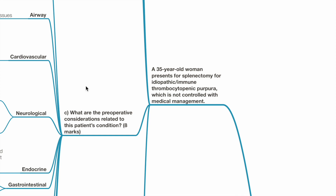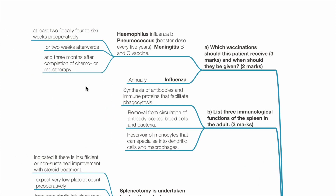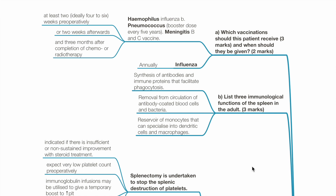Second case: A 35-year-old woman presents for splenectomy for idiopathic immune thrombocytopenic purpura not controlled with medical management. Question A: Which vaccinations should this patient receive and when? The answer is as mentioned in the previous question. Question B: List three immunological functions of the spleen in the adult. These include synthesis of antibodies and immune proteins that facilitate phagocytosis, removal from circulation of antibody-coated red cells and bacteria, and serving as a reservoir for monocytes that can specialize into dendritic cells and macrophages.